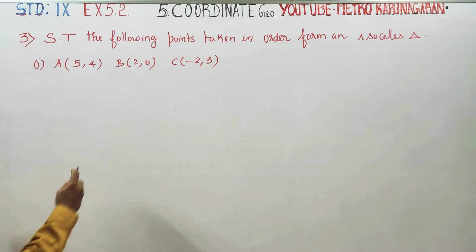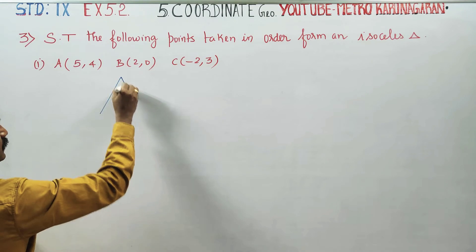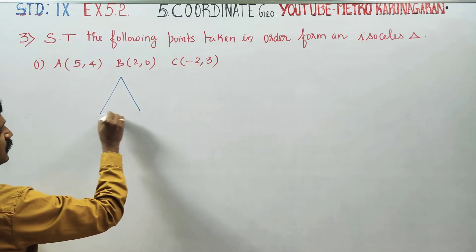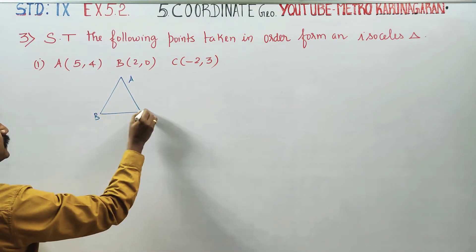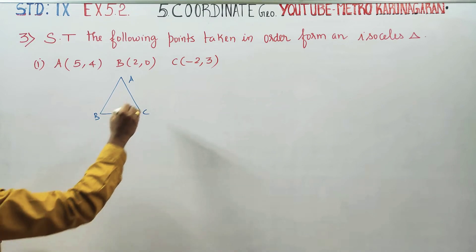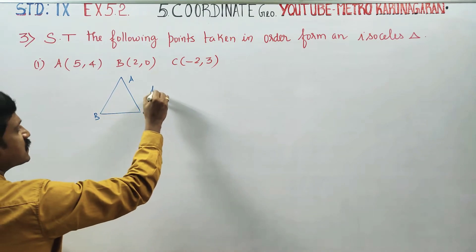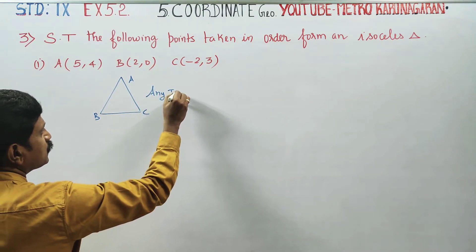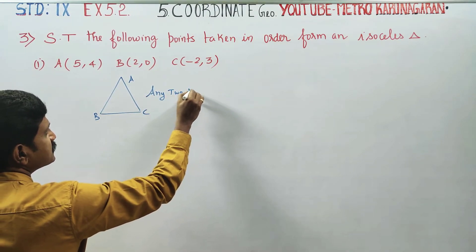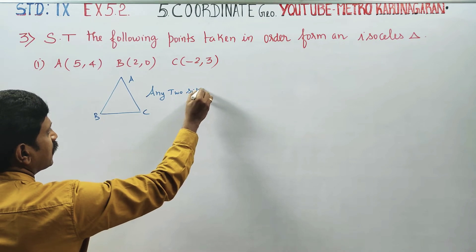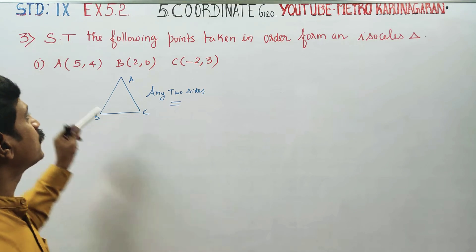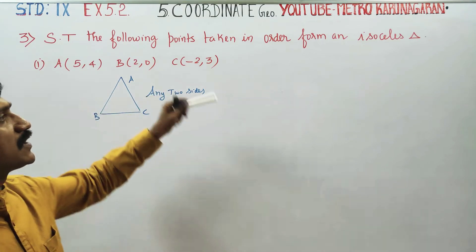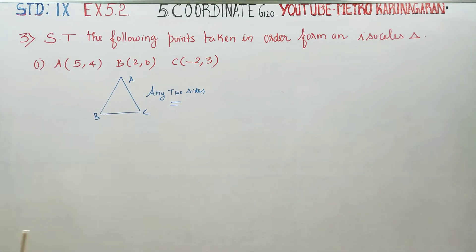What is the meaning of Isosceles Triangle? In a triangle, any two sides are equal to each other. If any two sides are equal, that set of points forms an Isosceles Triangle.